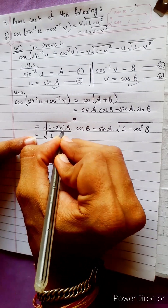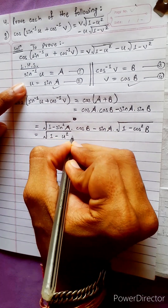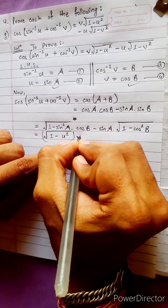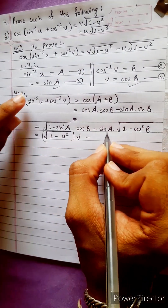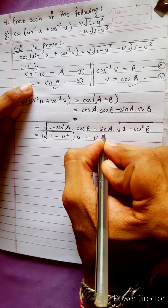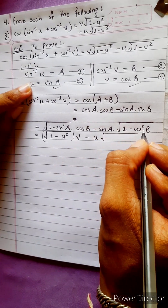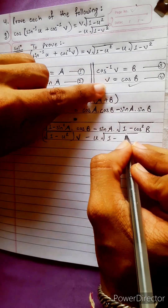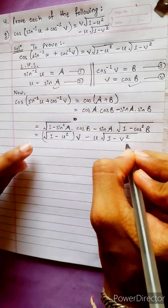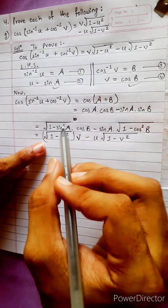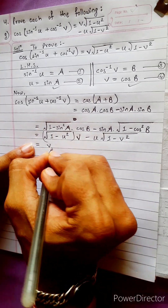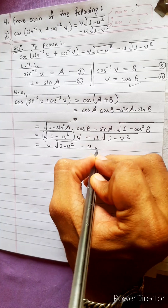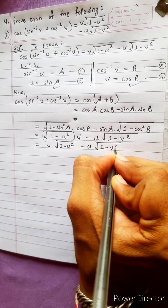1 minus sin square A — u squared — into cos B. Cos B is equal to B. Sin A is equal to u. 1 minus cos square B. Cos B is equal to B. This formula gives us: b times under root 1 minus u square, minus u times under root 1 minus b square.